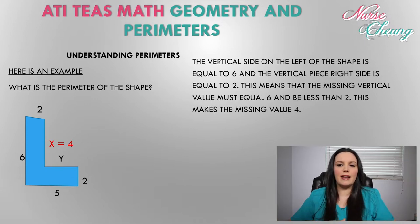So starting with x, the vertical side on the left side of the shape is equal to 6 and the vertical side on the right side of the shape is equal to 2. So we know that the missing value has to be equal to 6 but less than 2. So we're going to subtract these two values. 6 minus 2 is equal to 4, so we know that the missing value of x is equal to 4.